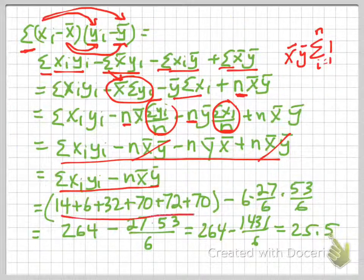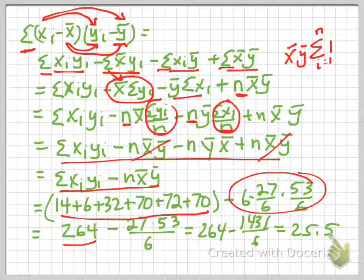So I have all those terms here, and then I add them all up. I get 264. Then I have this term here that I'm subtracting, and I'm going to end up with approximately 25.5.